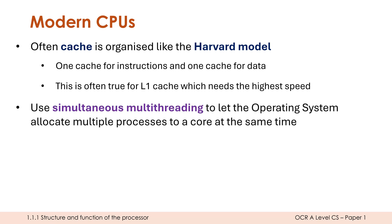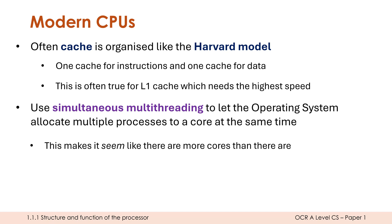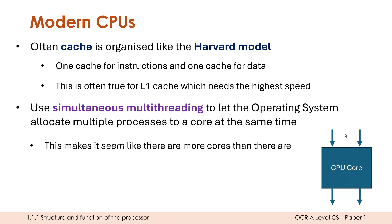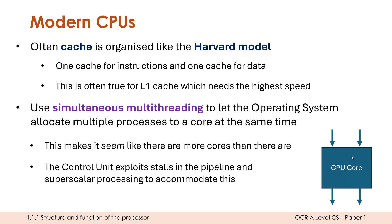A final concept is simultaneous multithreading. You might have seen on your computer it says you've got eight cores but 16 threads. A thread is really a fake core — often a core can have two threads, though generally it will be two. This technique allows the operating system to allocate multiple processes to a core at the same time, making it seem like there are more cores than there physically are. From the perspective of the operating system it behaves like it can do two instructions simultaneously, which isn't quite true — it can't literally do two at the same time. However, it can exploit things like stalls in the pipeline and superscalar processing to make it seem like it is doing two instructions at once. There is enough wiggle room that it pretty much behaves like it's doing two in one go.